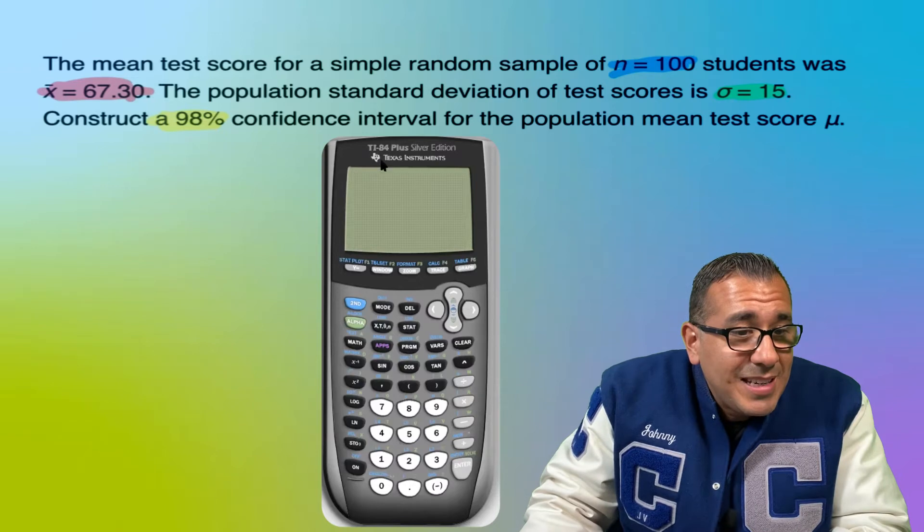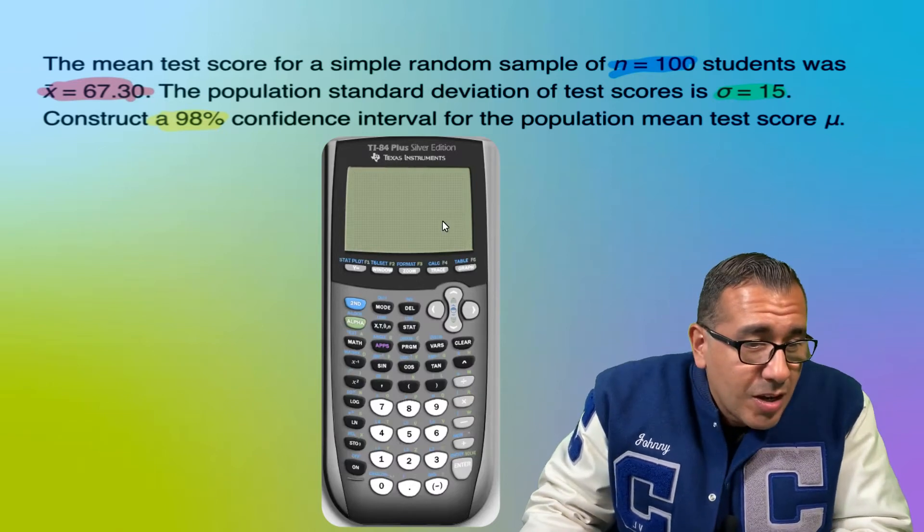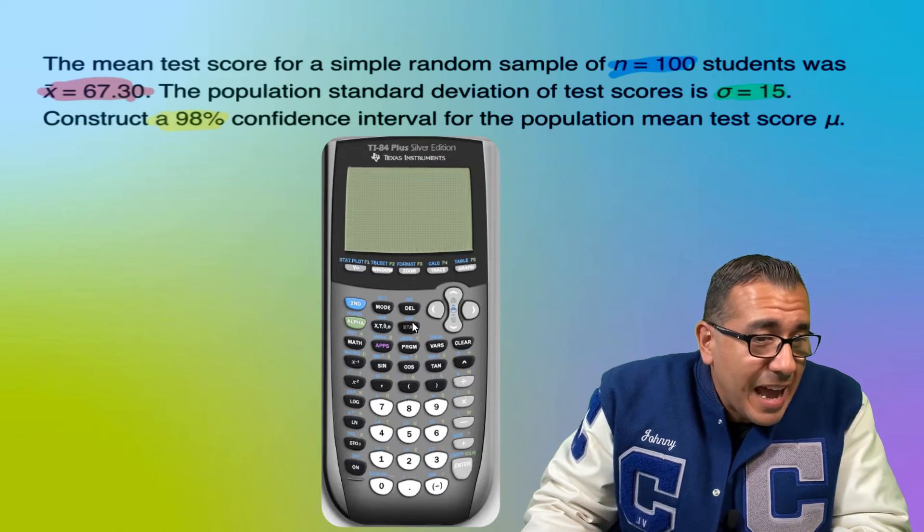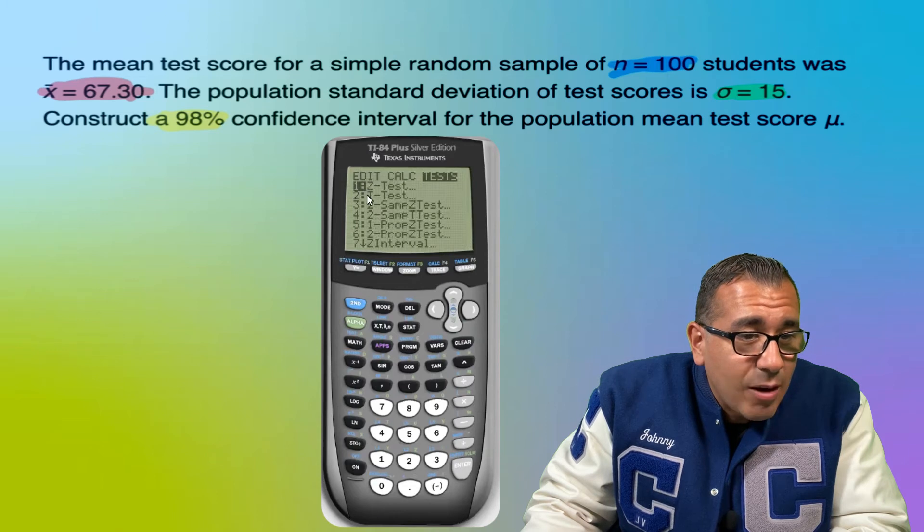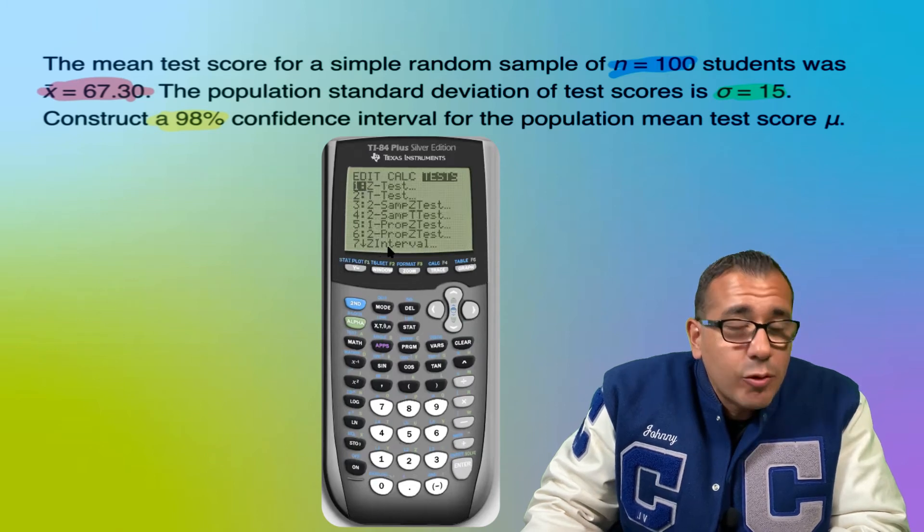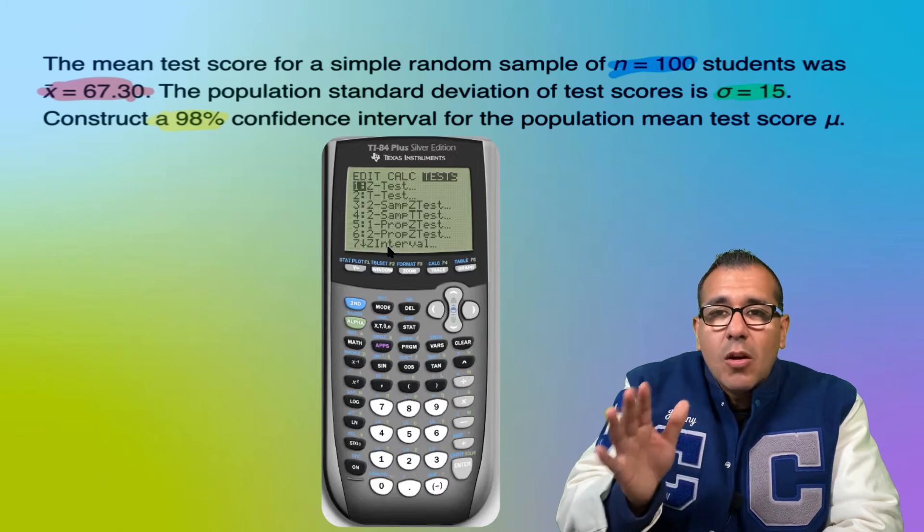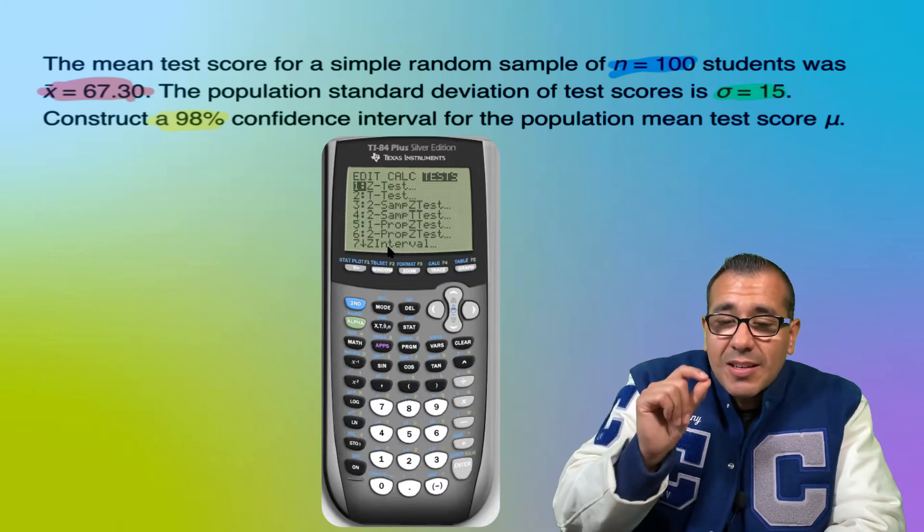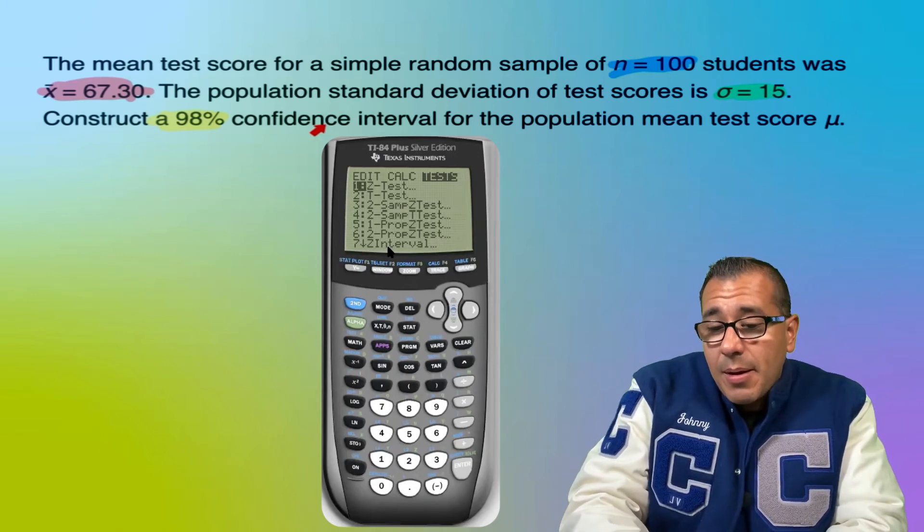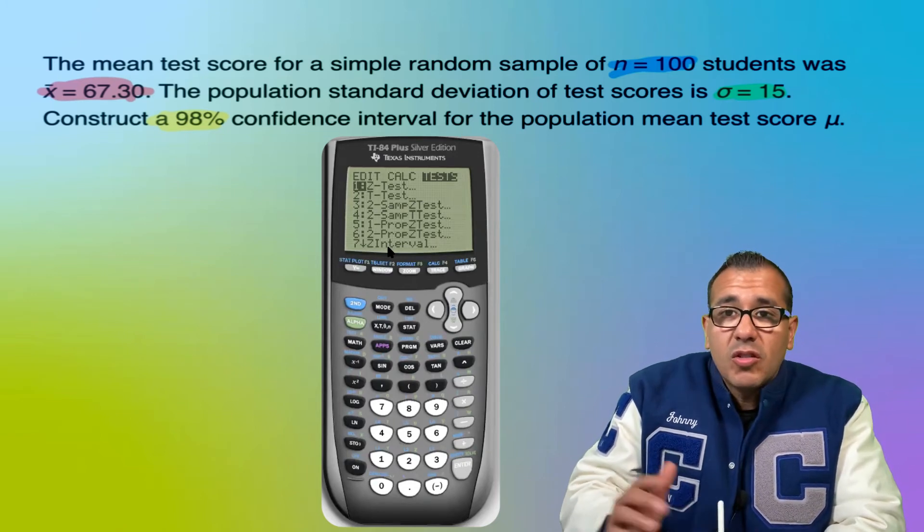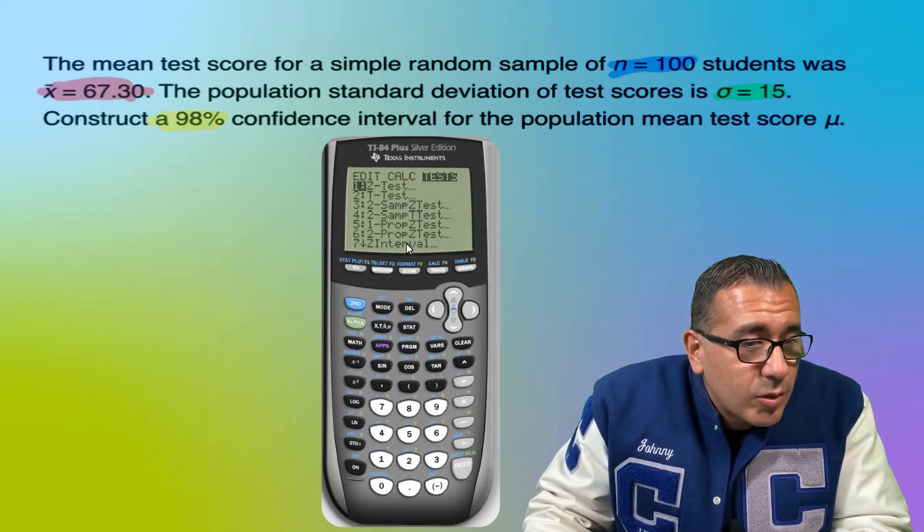So I got my TI-84 plus Dr. Math edition. All right. So check it out. You're going to hit STAT, go over to TEST, and we're going to use Z interval. A lot of people pick the wrong program. A lot of people will do Z test. We're not running a test here. This question asks us to construct the 98% confidence interval. So we're not running a test. So go ahead and click Z interval, which is choice number seven.